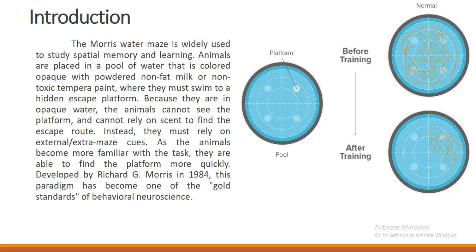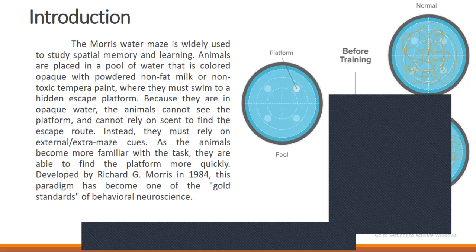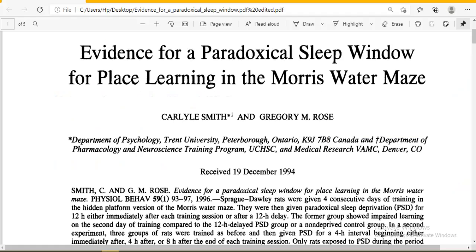Nowadays this paradigm has become one of the gold standards of behavior in neuroscience. The pool is divided into four equal quadrants. During training, when placing the rats in different quadrants, before training the rats show irregular movements, but after training there is a kind of symmetry in their movement. This experiment is used to study behavioral neuroscience of animals.